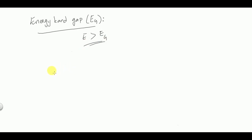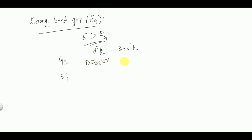We need to know the energy band gap values for germanium and silicon, as these are the most widely used semiconductors. At 0 Kelvin, germanium has 0.785 eV and at 300 Kelvin it is 0.72 eV. For silicon, at 0 Kelvin the energy band gap is 1.21 eV and at 300 Kelvin it is 1.1 eV.